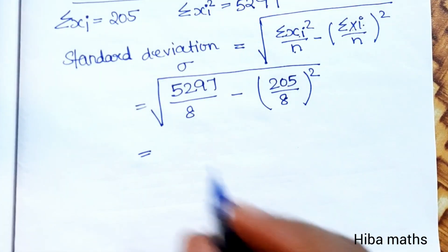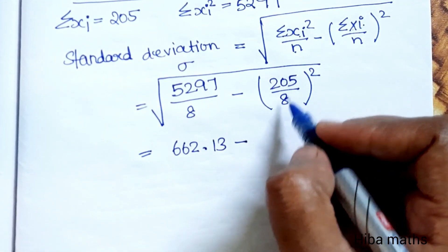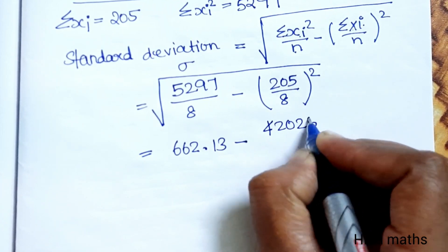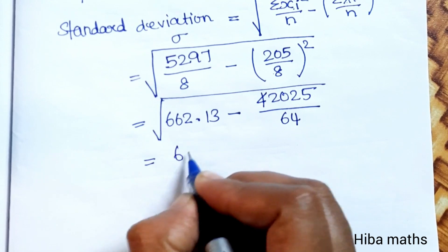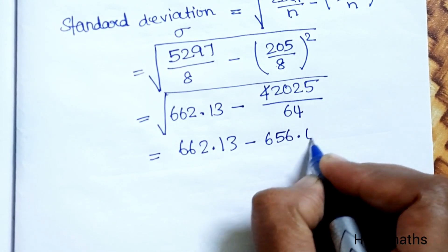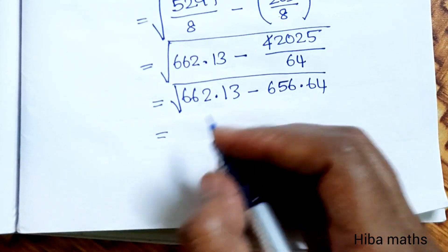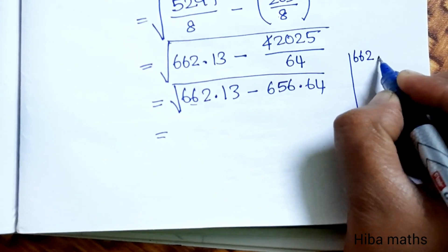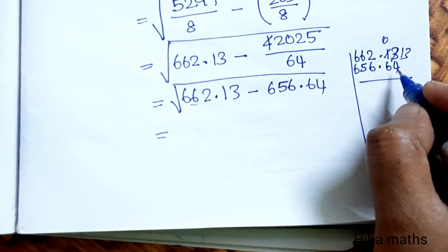Now we divide: 5297 divided by 8 gives 662.13. Then 42025 divided by 64 gives 656.64. So we have √(662.13 − 656.64), which gives √5.49.